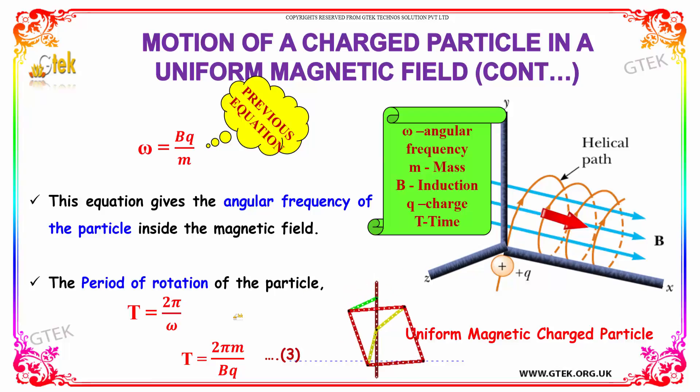Now if you talk about the period of rotation, how fast the particle is rotating, it's 2 pi divided by omega. Substituting omega here, you got T equal to 2 pi M divided by BQ.